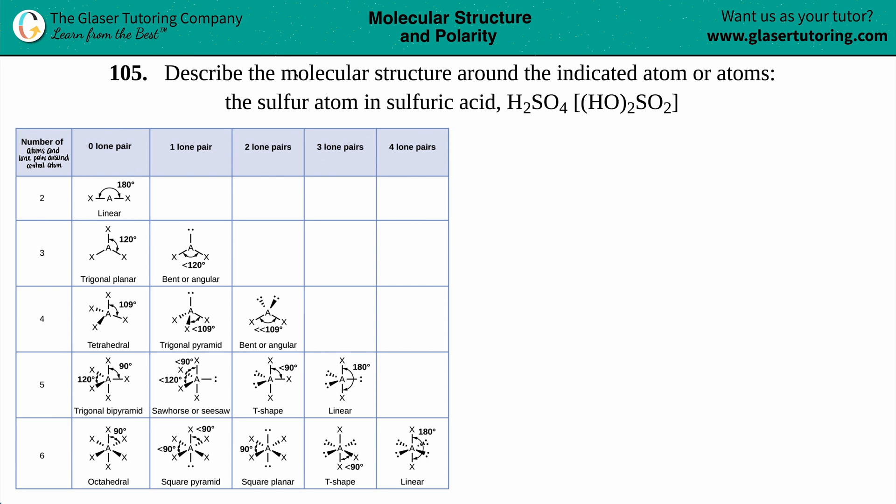Number 105. Describe the molecular structure around the indicated atom or atoms. And then we have to find out the molecular structure in the sulfur atom in sulfuric acid, which is H2SO4 or HO2SO2.